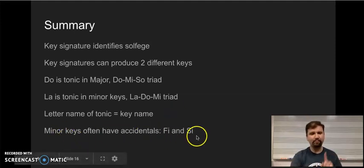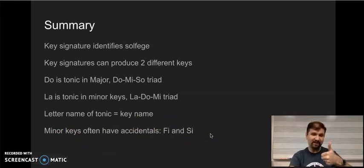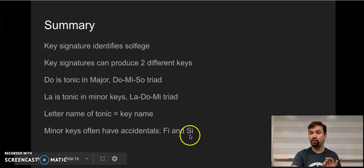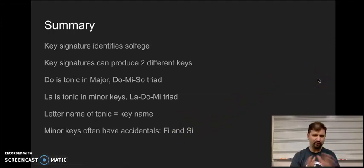Minor keys often, but not always, possess accidentals on fa, changing it to fi, and so, changing it to si. Of those two, by far the more common one is so, changing it to si. So, keep that in mind as you're looking through melodies and you're trying to determine are they in major or are they in minor. Review any of these that you need to in order to feel really solid on how minor keys work and how some of the stuff that you've already done in major connects over exactly to minor and how other things might be just a little bit different.